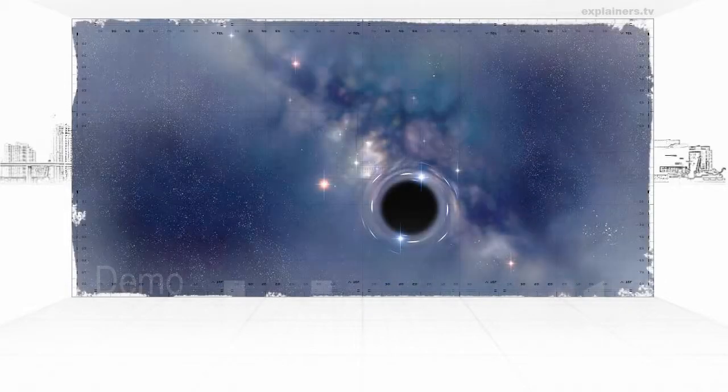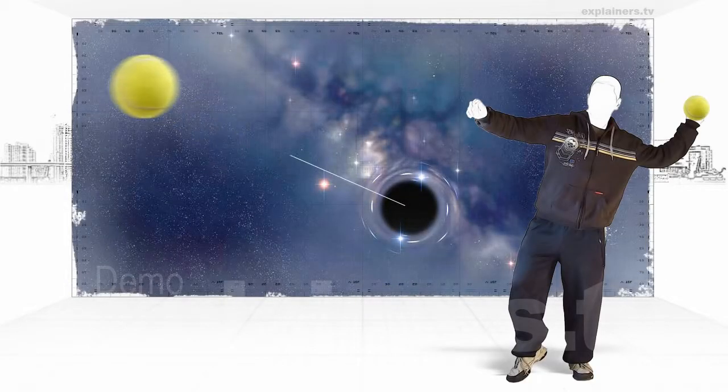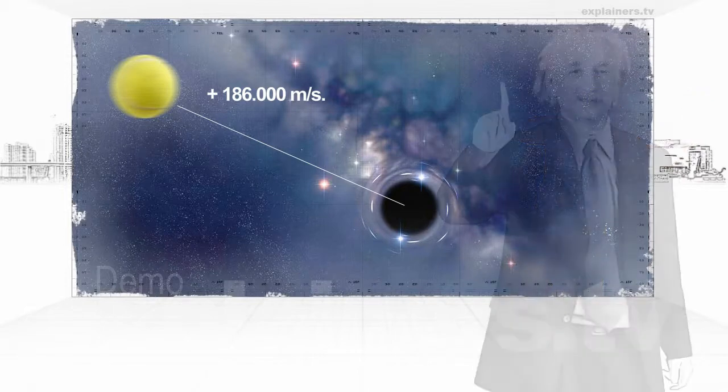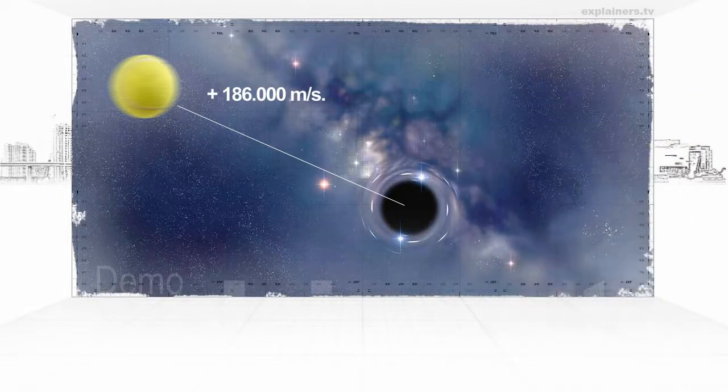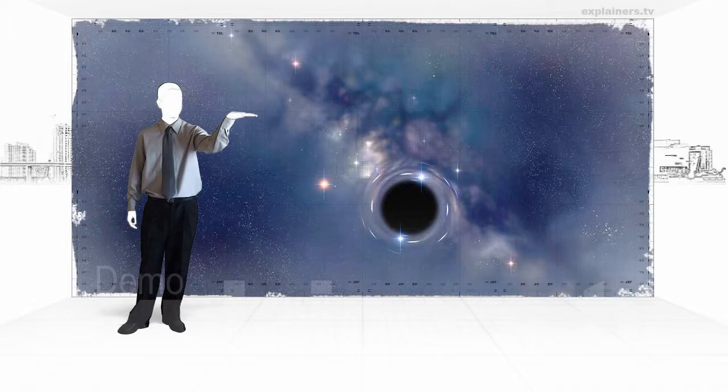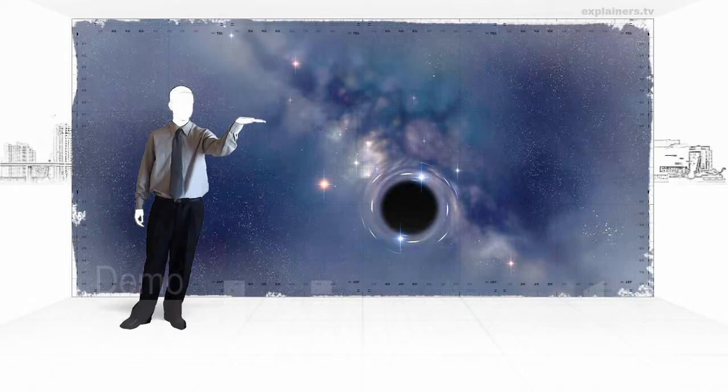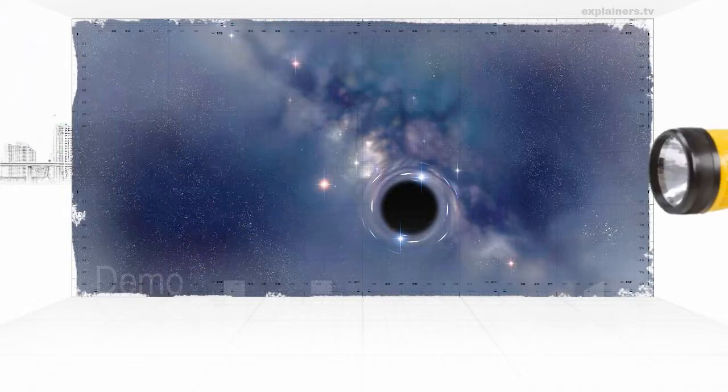A black hole is a place that has an escape velocity higher than the speed of light. According to Einstein, nothing in the universe can travel faster than light. Therefore, everything that happens near a black hole is trapped in it forever, including light.